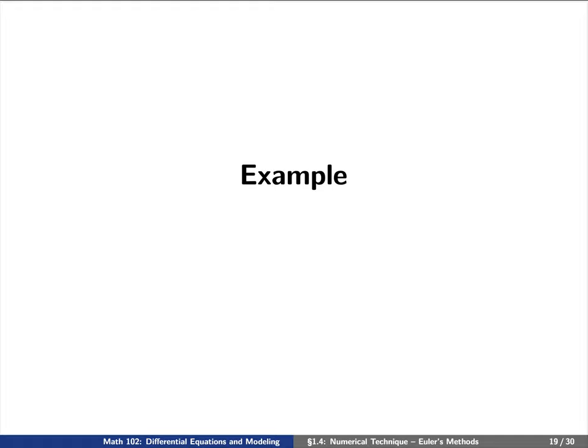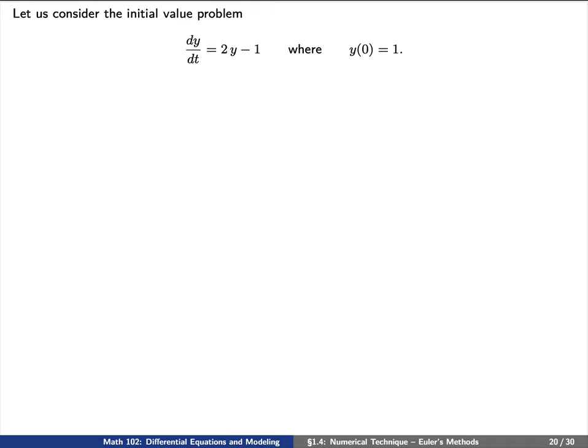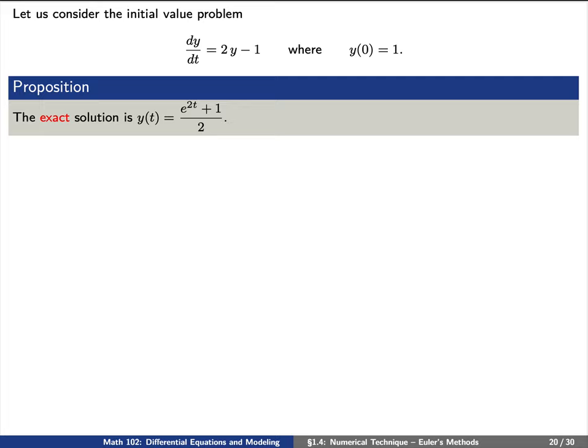Let's give an example to explain how all of this works. Let's consider the initial value problem dy/dt equals 2y minus 1, where y of 0 equals 1. First, let's compute the exact solution of this differential equation.